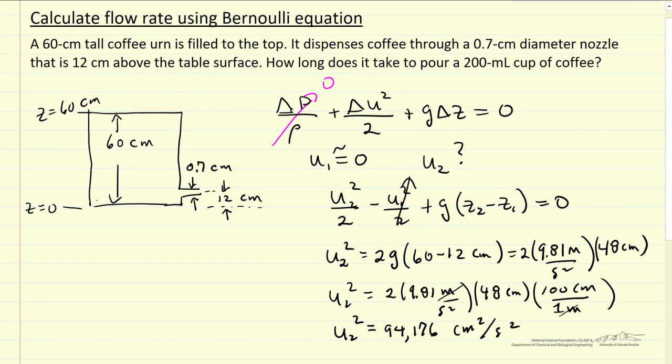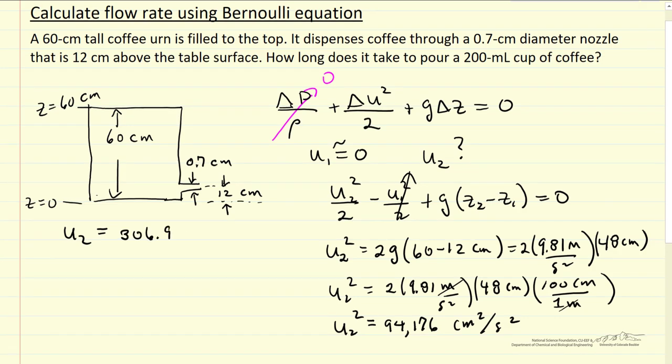94,176 centimeters squared per second squared, which means U2 is the square root of that, and so that's 306.9 centimeters per second. That's the velocity leaving.